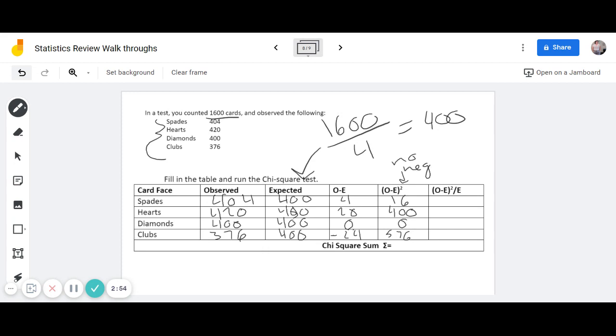So then we go back and we take our second to last column and go back and divide it by our expected. So 16 divided by 400 is going to be 0.04.